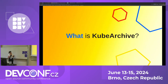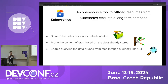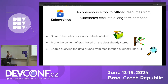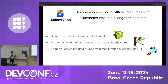So what is kubearchive? Kubearchive is an open source tool that offloads resources from the Kubernetes etcd database into a long-term database. It stores Kubernetes resources outside of etcd, prunes the content of etcd based on data already stored, and also enables querying data pruned from etcd through a kubectl-like CLI — so the user can query resources the same way they do with the get command in kubectl, even with those resources outside of the cluster database.